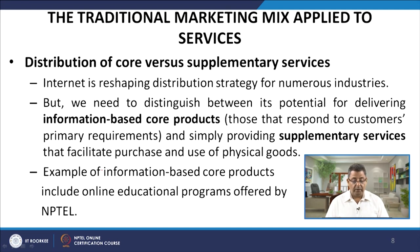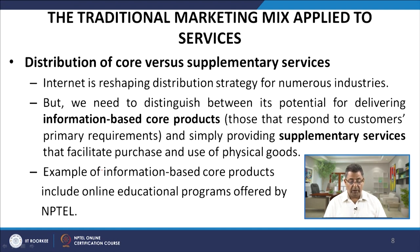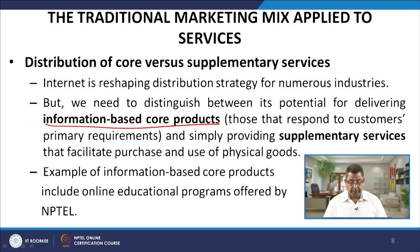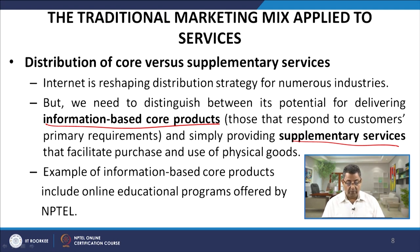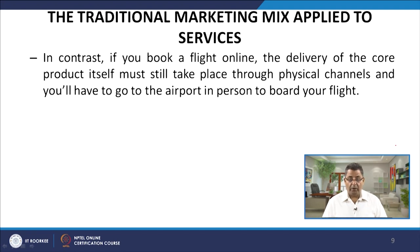The next important thing is the distribution of core versus supplementary services. The internet is reshaping distribution strategy for numerous industries, but we need to distinguish between its potential for delivering information-based core products — those that respond to customers' primary requirements — and supplementary services that facilitate purchase and use of physical goods. An example of information-based core products includes online education programs offered by NPTEL. In contrast, if you book a flight online, the delivery of the core product itself must take place through physical channels and you will have to go to the airport in person to board your flight.